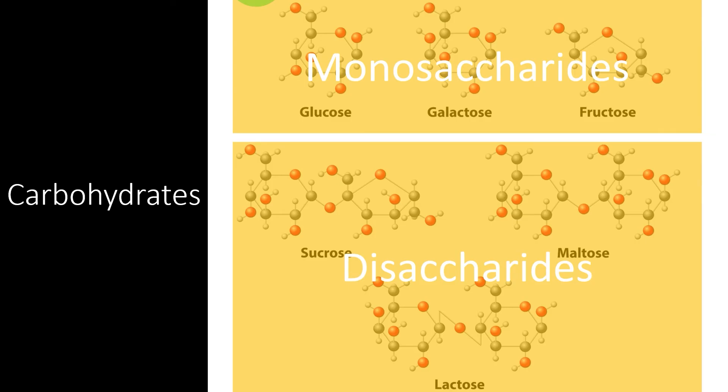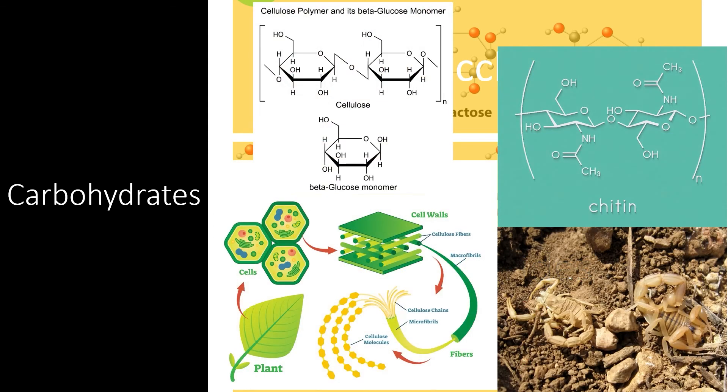Sucrose, also known as table sugar, is the most recognizable carbohydrate dimer. However, carbohydrate monomers can also be combined into very long polymer chains. Let's take a look at two very important polysaccharides: cellulose and chitin.